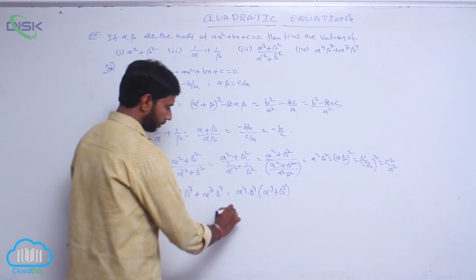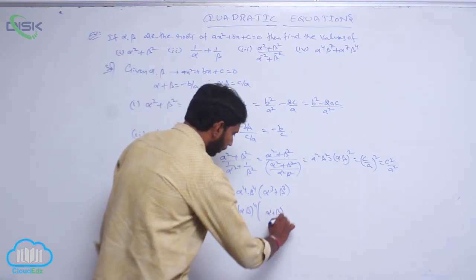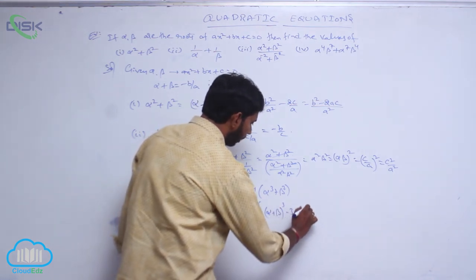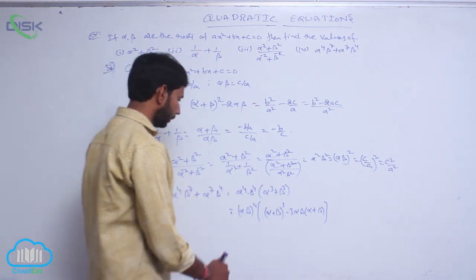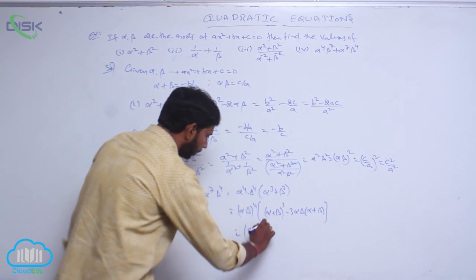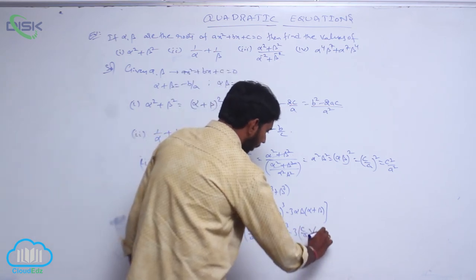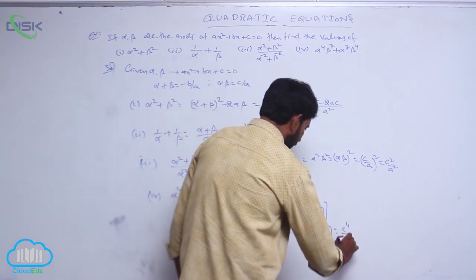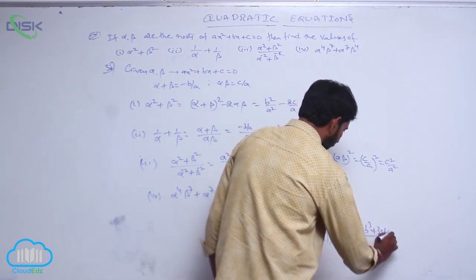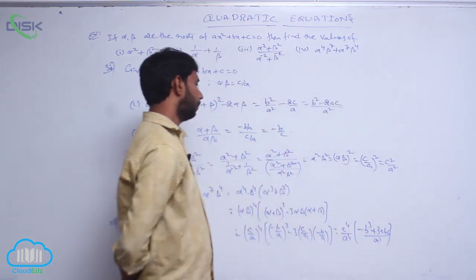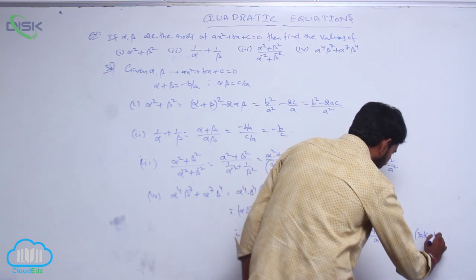Alpha cubed plus beta cubed can be written as (alpha plus beta) whole cubed minus 3 alpha beta (alpha plus beta). So the expression becomes (alpha beta) to the power 4 into (alpha plus beta) cubed minus 3 alpha beta (alpha plus beta). Substituting, alpha beta equals c by a and alpha plus beta equals minus b by a, giving c power 4 by a power 4 multiplied by (minus b by a) cubed minus 3(c by a)(minus b by a), which simplifies to c power 4 by a power 4 into (minus b cubed plus 3abc) by a cubed.